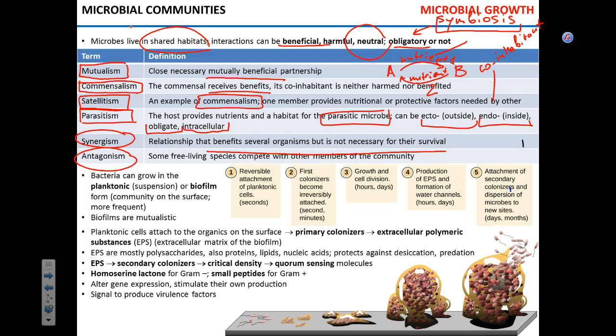Talking about microbial communities, we must address biofilm. Microorganisms can grow either in planktonic form — suspended in liquid, as when you inoculate liquid media — or as biofilm, which is growth on a surface. Biofilm growth is actually much more frequent than planktonic growth. Relationships in the biofilm are usually mutualistic or commensal.